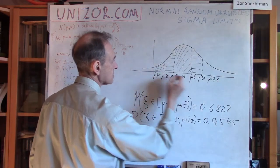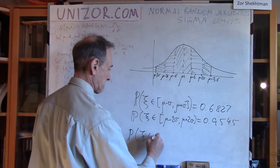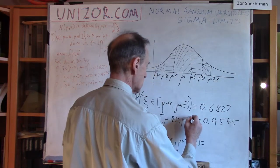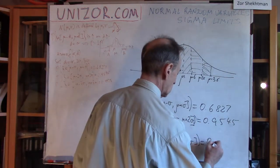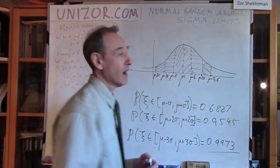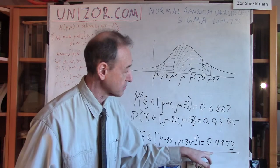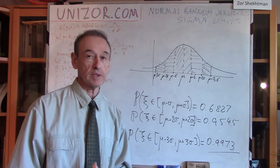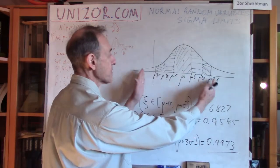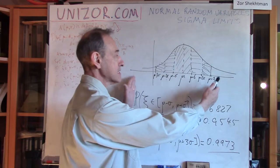Let's widen even further: from mu minus three sigma to mu plus three sigma. The probability is 0.9973 — almost 100%. These little tails are really insignificant. It is still possible to get a value in the tails with probability 0.0027, which is very low. Statistically, if we perform the experiment again and again, almost everything will fall within this wider interval from minus three sigma to plus three sigma around the mean. Our prediction is less precise, but with more probability.